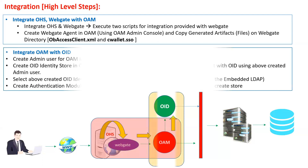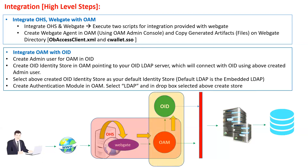For OAM and OID integration: first, create an admin user for OAM in OID, because OAM will connect with OID as its identity store and authenticate all identities from OID. Second, create an OID identity store in OAM pointing to your OID LDAP server, using the admin user you just created. By default, Oracle middleware products use WebLogic's native LDAP authentication — configuring OAM with OID replaces that default module.